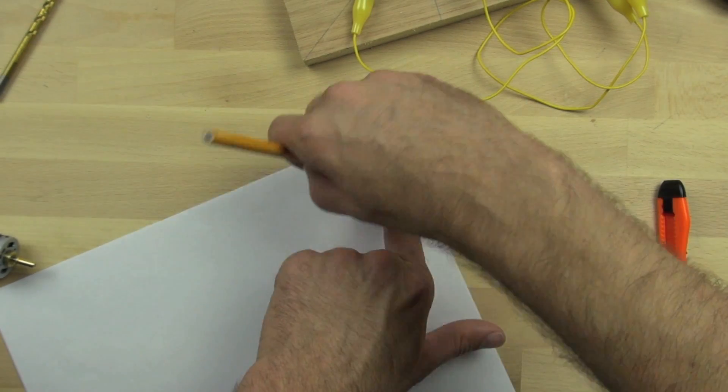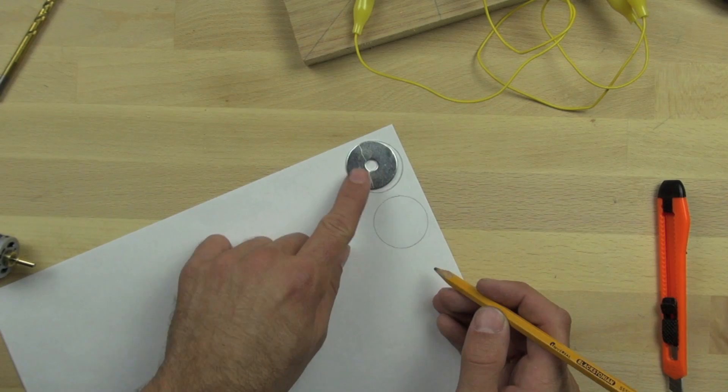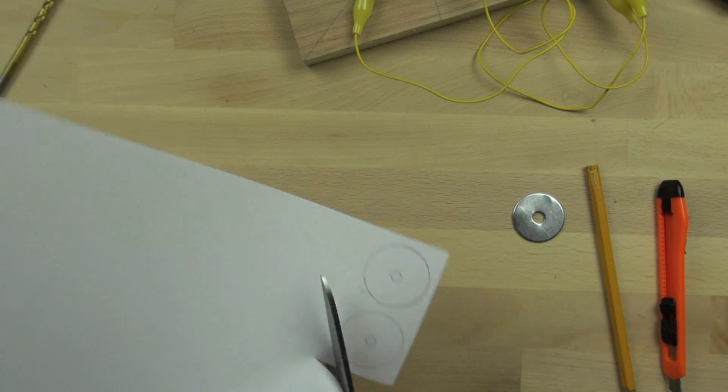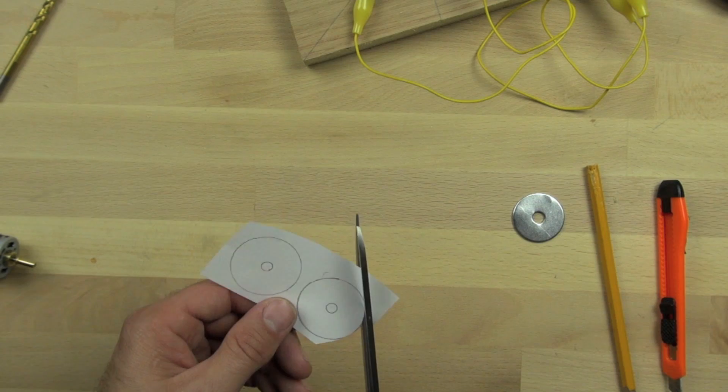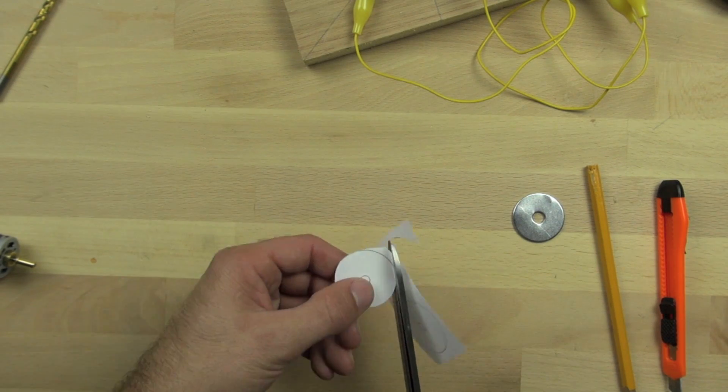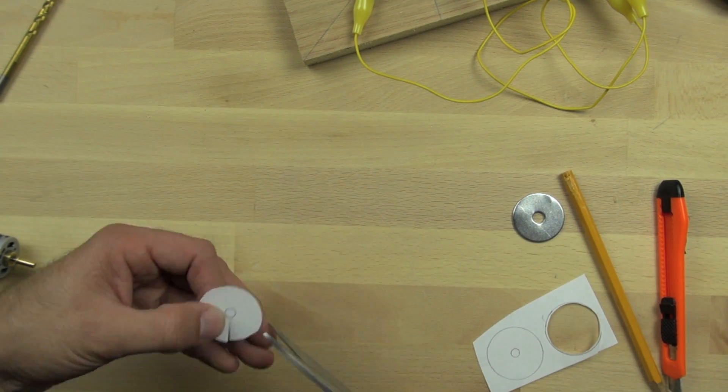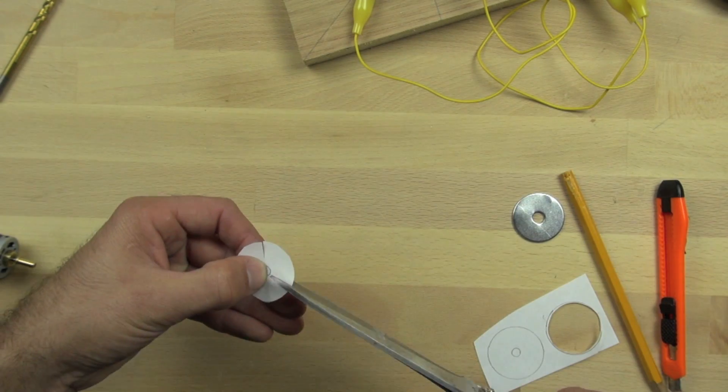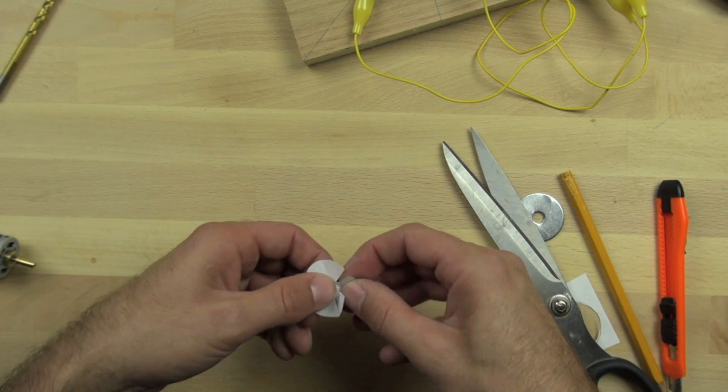So we're going to take our washer here and we're going to just mark out some circles in paper and we'll take some scissors and we're going to cut those circles out. We're going to make a little tiny fan out of this paper. Now the motor that we made isn't super powerful, so we have to make a pretty light and small fan. But it does move and demonstrate the principles.